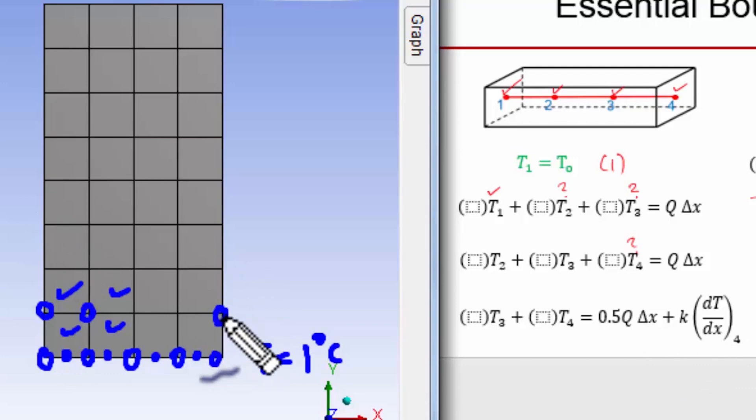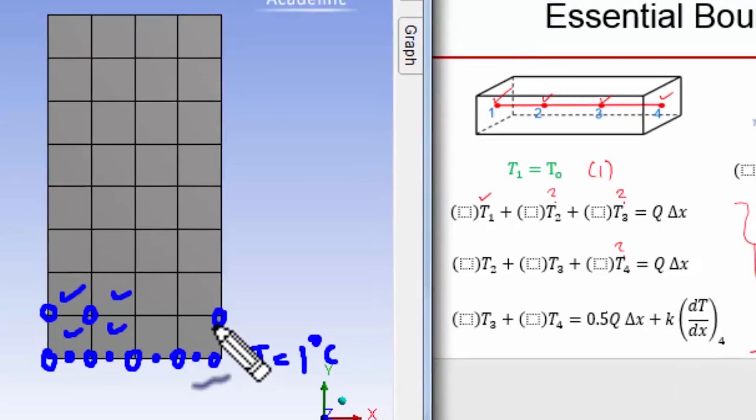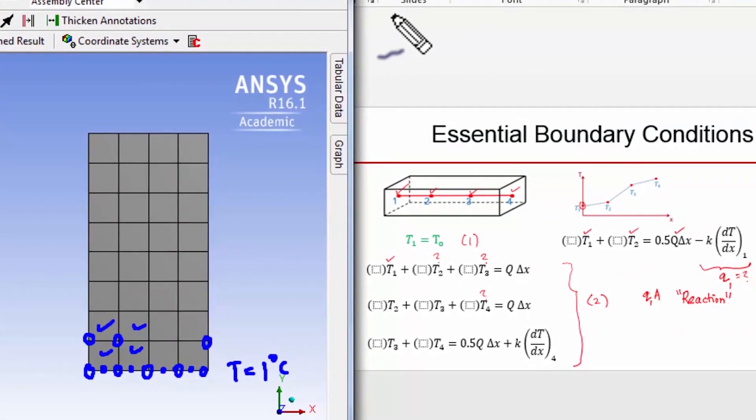For nodes at the right boundary such as this, the heat flux is not zero, so you're going to get a non-zero right-hand side for those nodes. We have 121 nodes in total. Nine temperature values will be determined from the essential boundary condition.